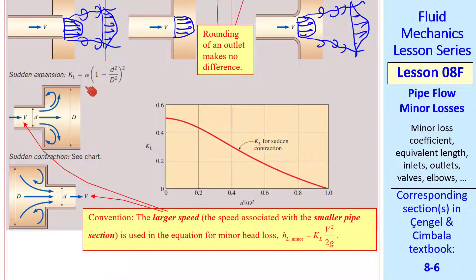There are formulas here for sudden expansion and sudden contraction, where KL varies from 0.5 to 0 for a contraction, when d over d goes from 0 to 1.